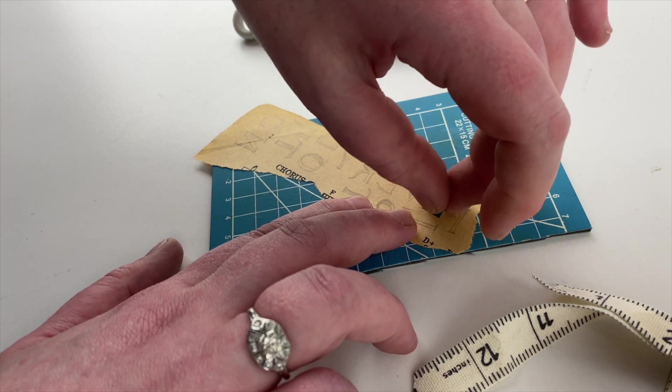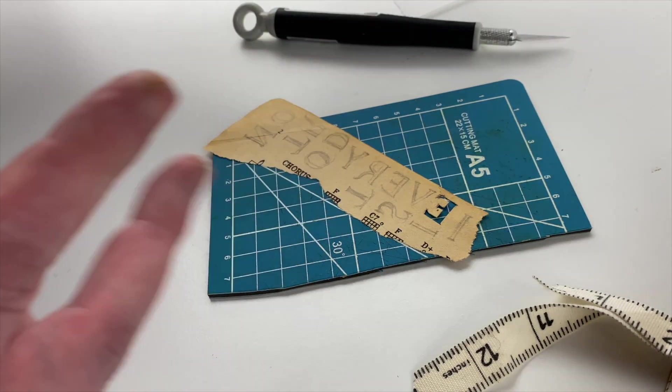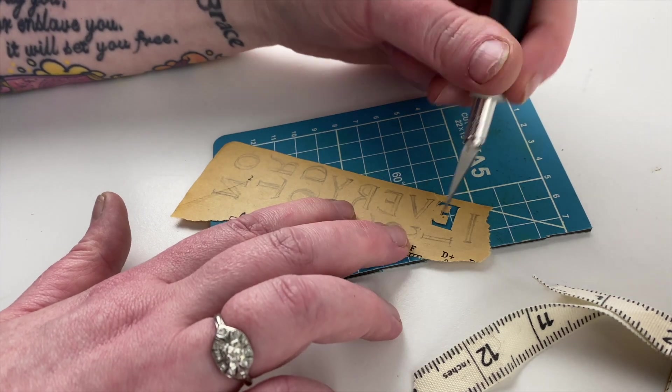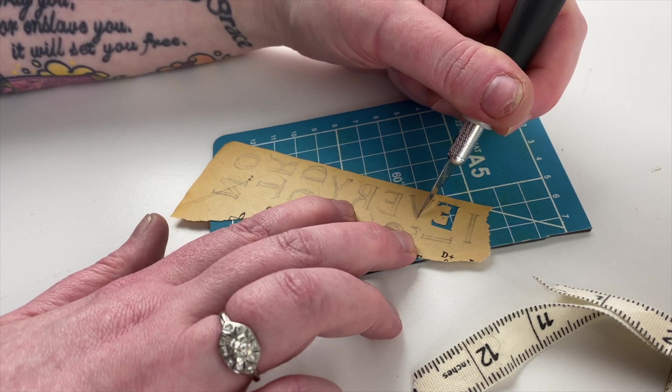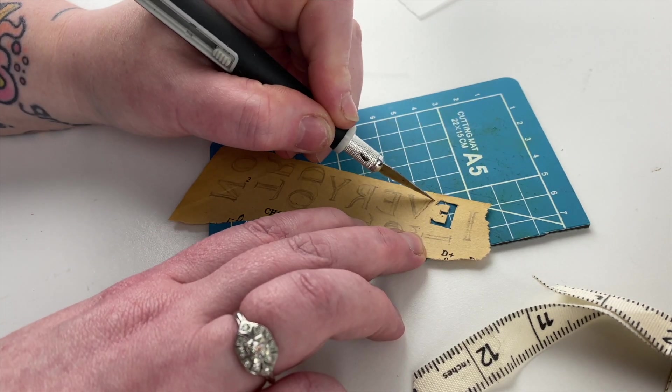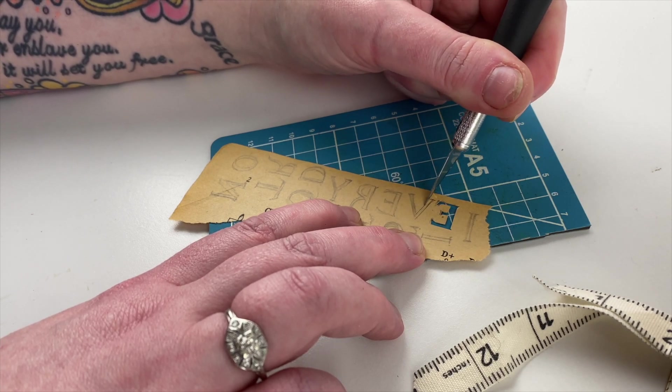I'm just using my craft knife, a little scalpel thing, to cut them out and then setting them aside because they're going to go onto another piece of paper in a minute. I'm cutting them out with this knife which is the same one that I use for doing other kinds of collage.